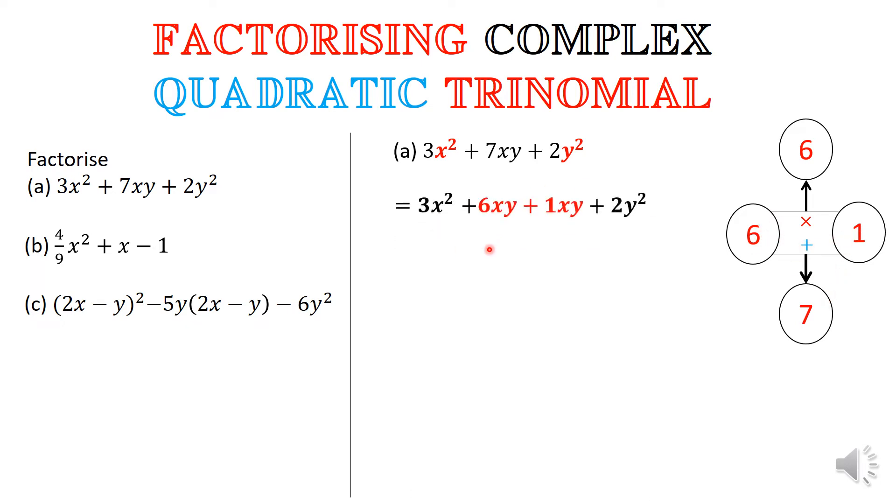So that means we can split the 7xy term as nothing but 6xy plus 1xy. Of course there is no need for you to write the 1 here. So what you have now is four terms. And you are going to factorize these four terms by taking out common factor by grouping.